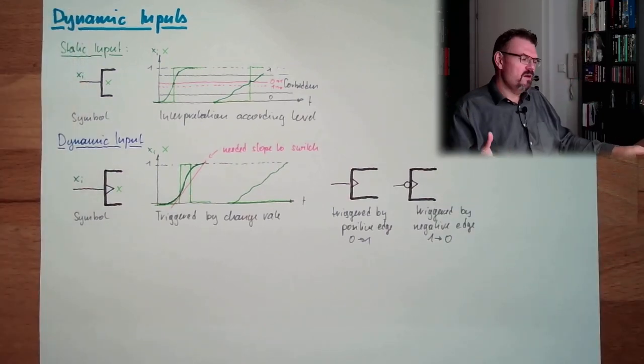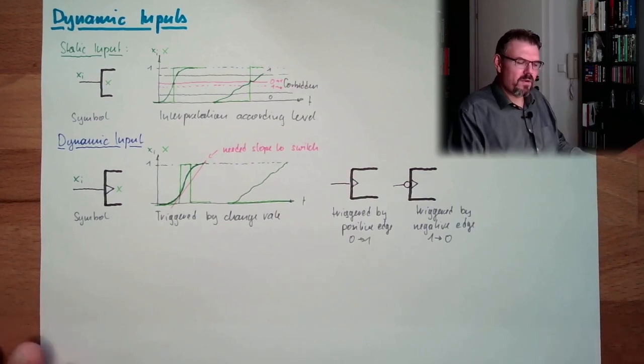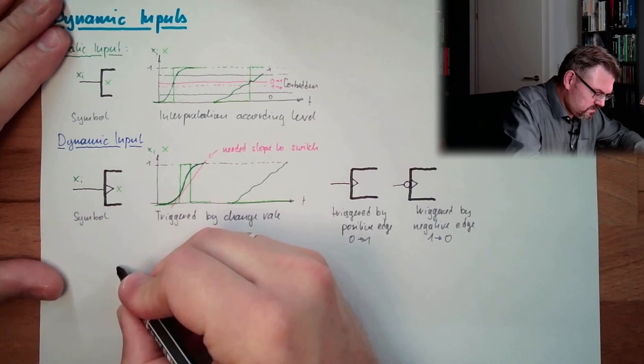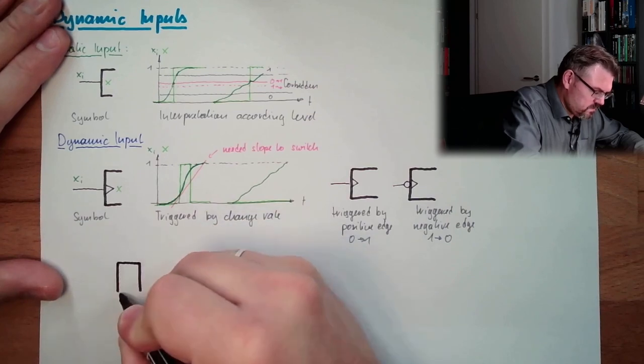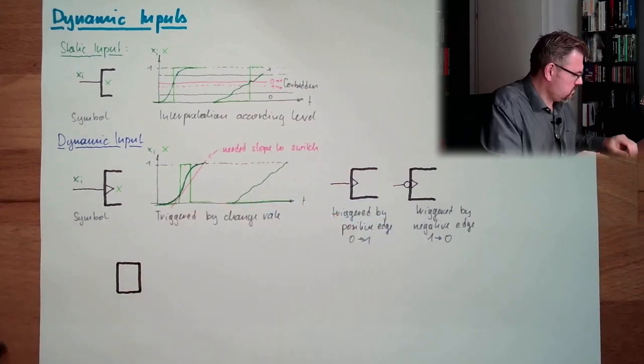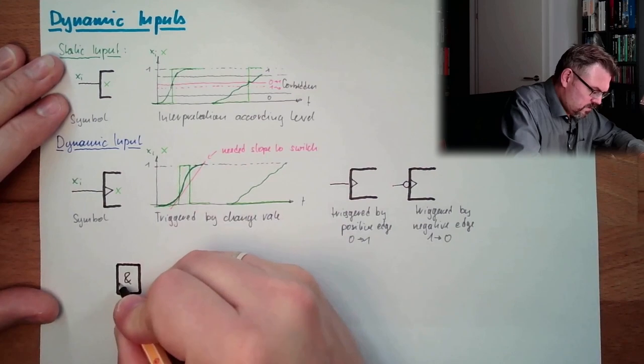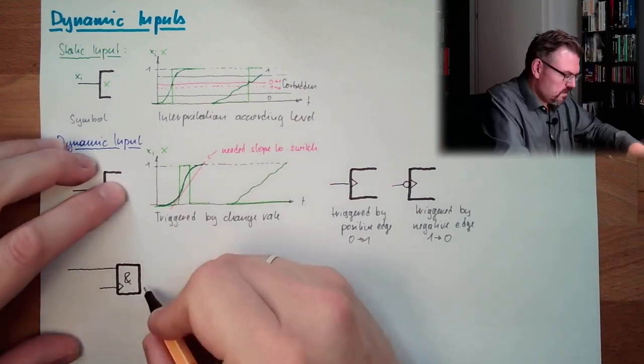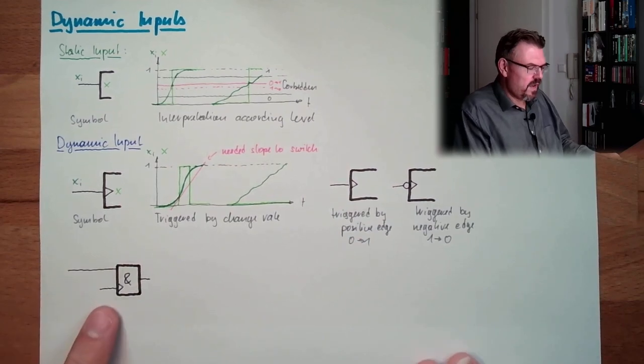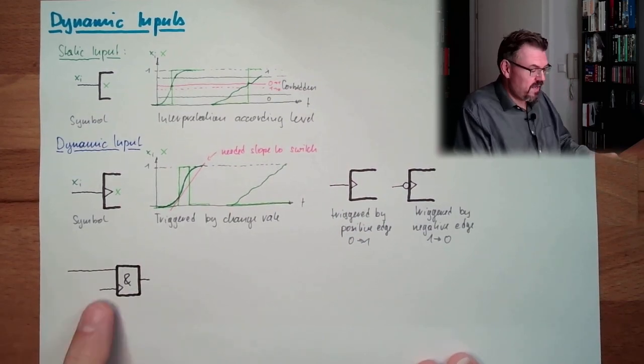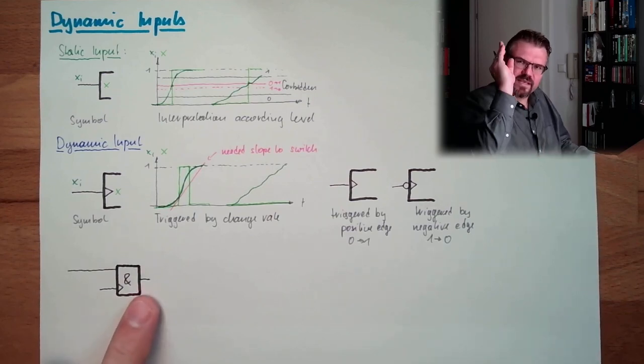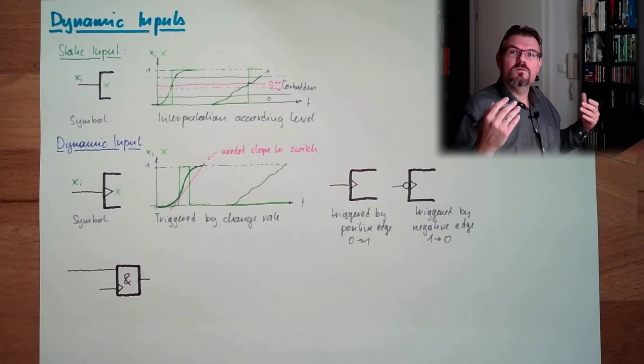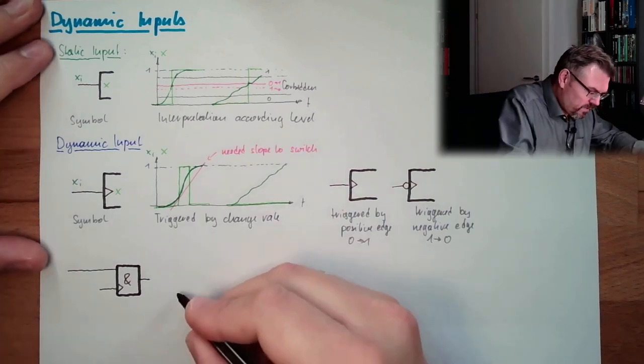And we can easily have elements where we have both type of inputs. So, for instance, there is an AND element with one static input and one dynamic input. So, here we have the output. Whenever the static input is 1 and we have a rising edge at the dynamic input, here will be a short pulse. And this short impulse can be used to switch a memory, one bit memory. We talked about one bit memories last time.